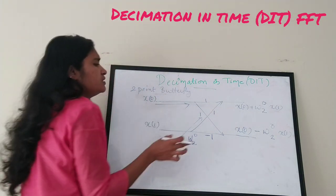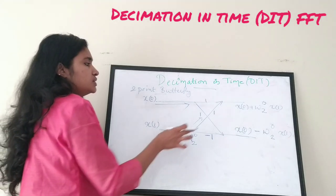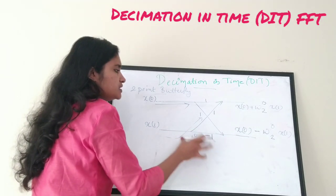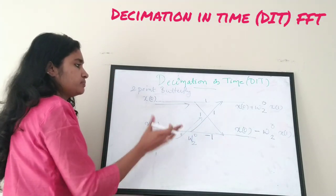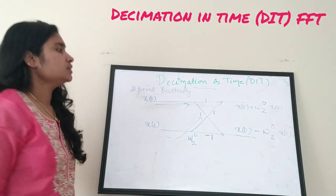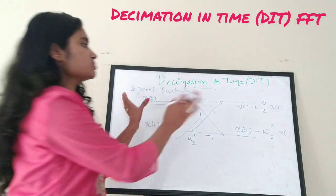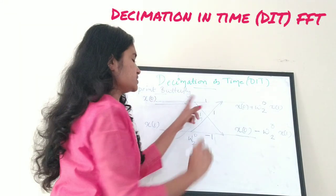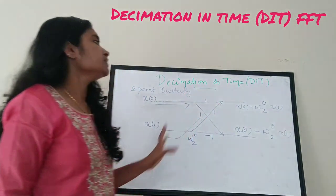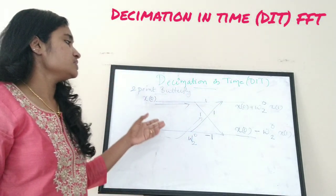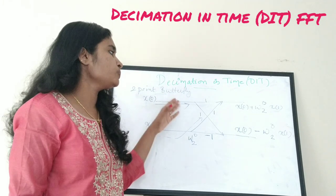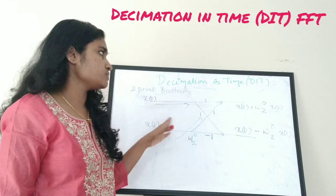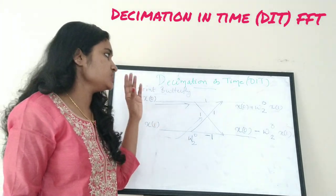The name 'butterfly' is given because of the shape — it looks somewhat like a butterfly. So this is the two-point butterfly diagram for decimation in time.